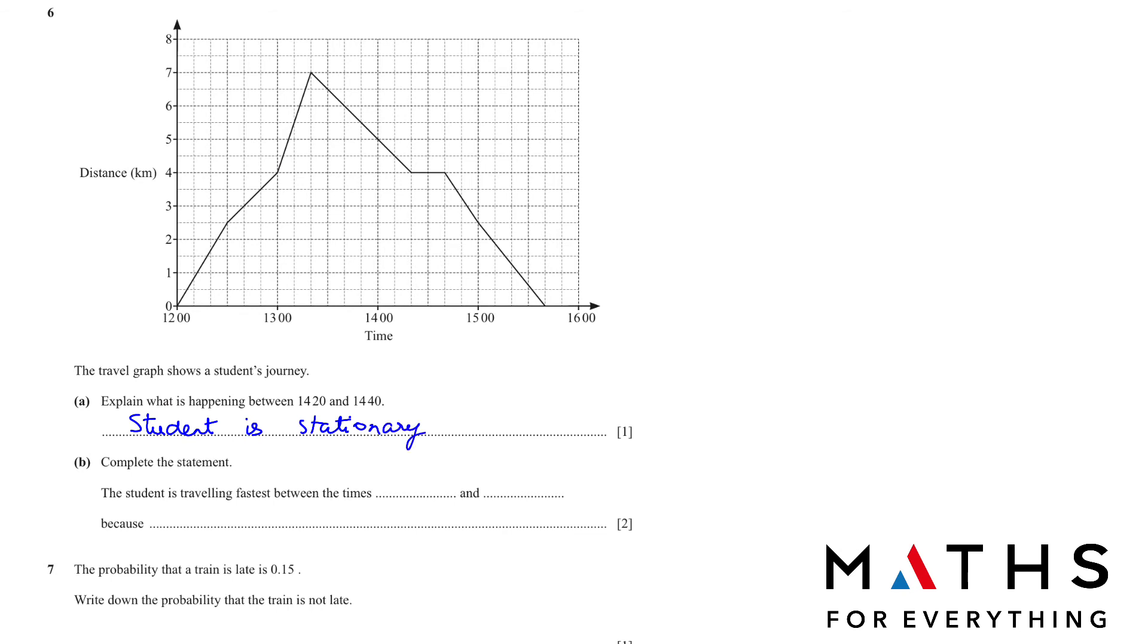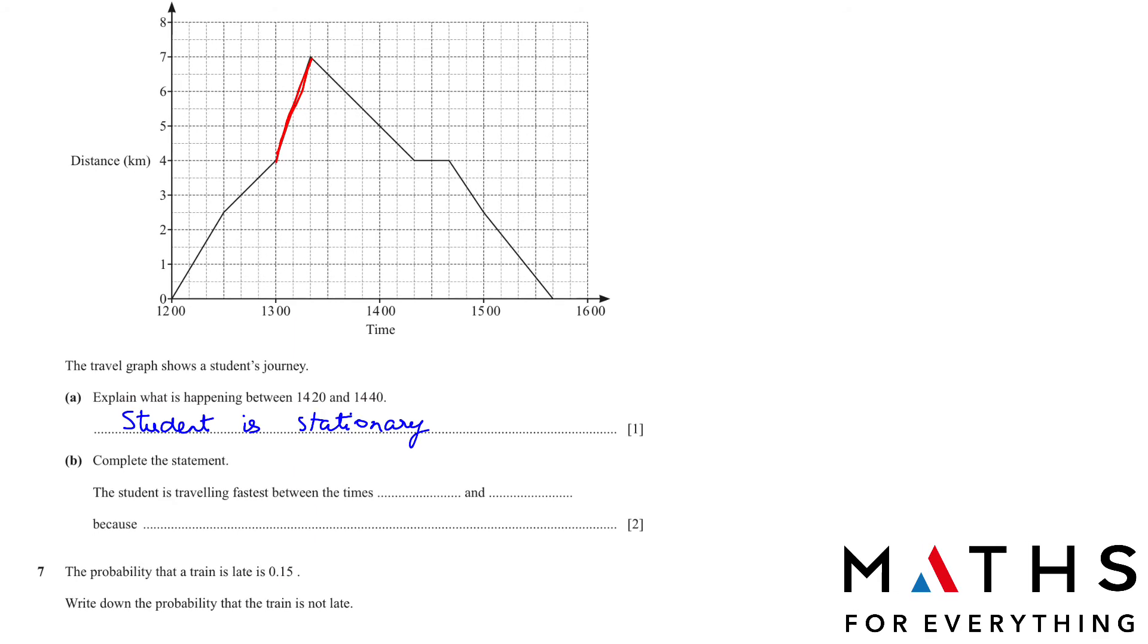Part B: Complete the statement. The student is traveling fastest between the times. Fastest is when your line is the steepest. So where do you think it is the steepest line? We have this line here, this here and here. As you can notice, this is the steepest line between 13:00 and 13:20. Why? It is steepest because the gradient is steepest. So keep that in mind.